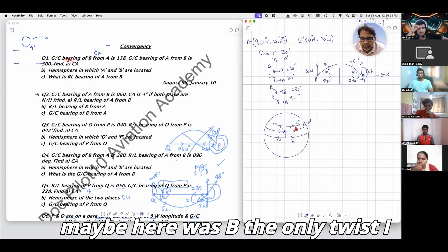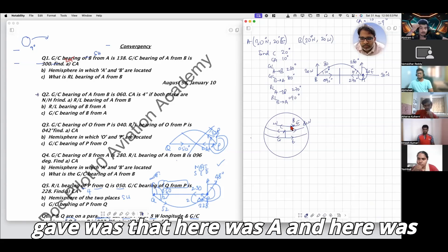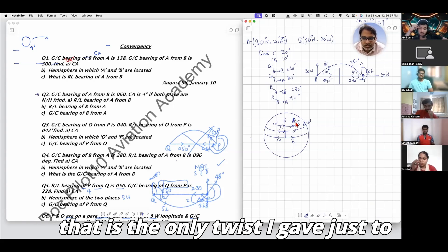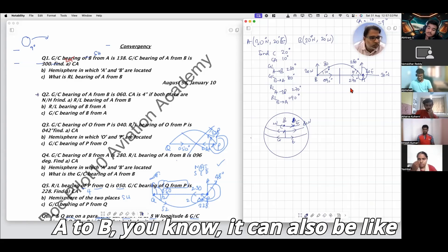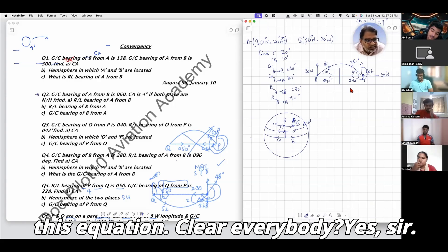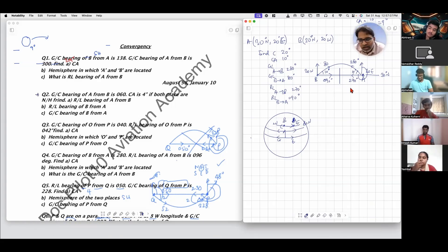This is 30 degrees north. Maybe here was B. The only twist I gave was that here was A and here was B. Just to make sure you understand that A doesn't always have to be on one side. Clear everybody? Yes sir, okay.